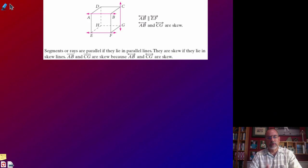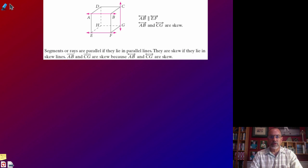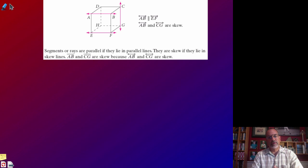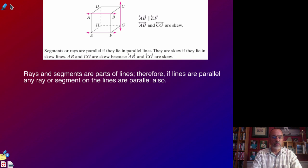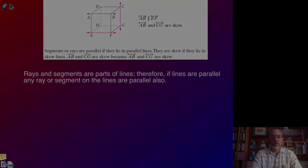We can now extend this to what we know about the parts of lines. If lines are known to be parallel, then segments of those lines must also be parallel, and rays that are parts of those parallel lines will also be parallel. So segments can be parallel, rays can be parallel, and the same applies for skew — segments can be skew and rays can be skew as well. Because rays and segments are parts of lines, if the lines they're part of are either parallel or skew, then the rays and segments will also be parallel or skew.